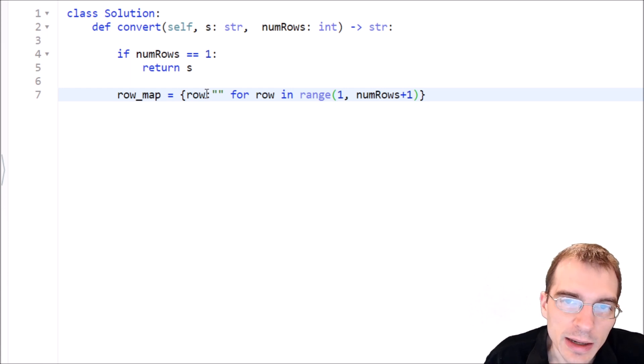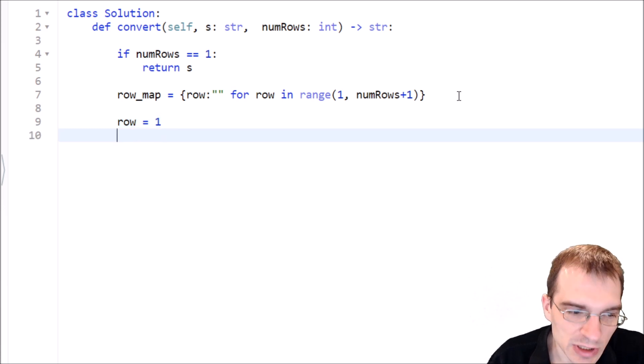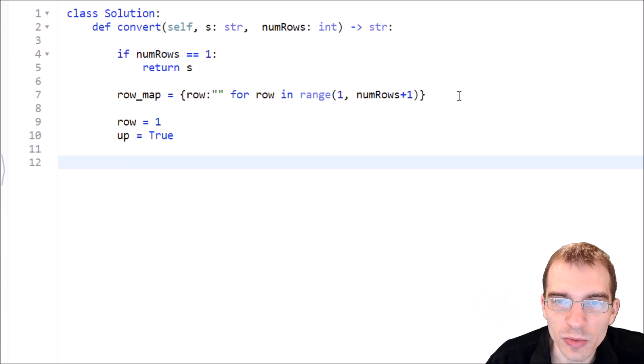We'll start by initializing the map that will keep track of what's in each row. We're going to need a row for each row in the row length given by numRows. For row in range one to numRows plus one. Now we can initialize the variables we need to keep track of the logic. We needed to keep track of what the current row is. We'll start at row one because the first letter we're going to look at is going to be row one. We also have to keep track of whether we're currently moving up or down in the zigzag pattern.